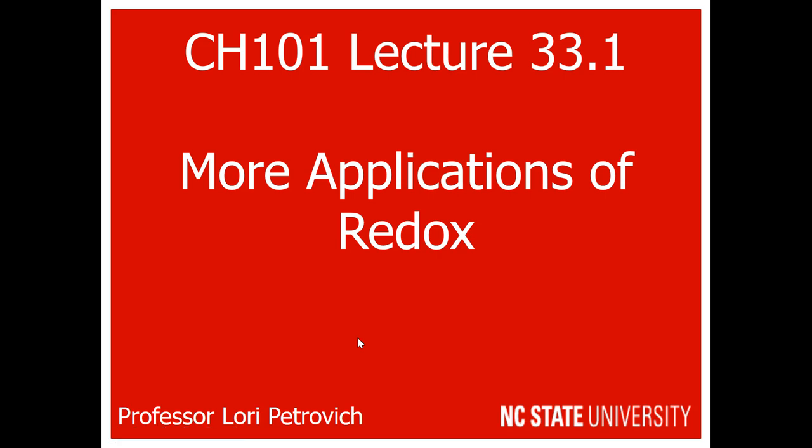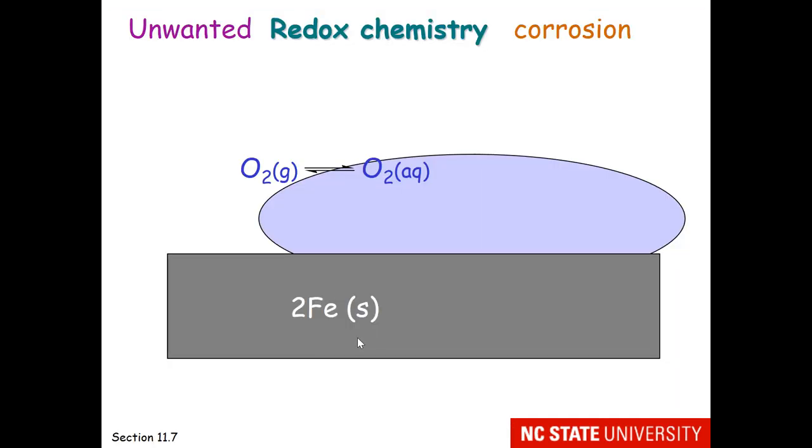Here are some more applications of redox. We'll start with some unwanted redox chemistry known as corrosion. I'm sure you know that iron will rust if left outside. Iron will rust more quickly in humid climates than in dry climates. The reason is that water has a role as a conduit to move the ions and help this redox reaction happen. Oxygen is soluble in water, so wherever you have water, you have dissolved oxygen, at least on this planet.